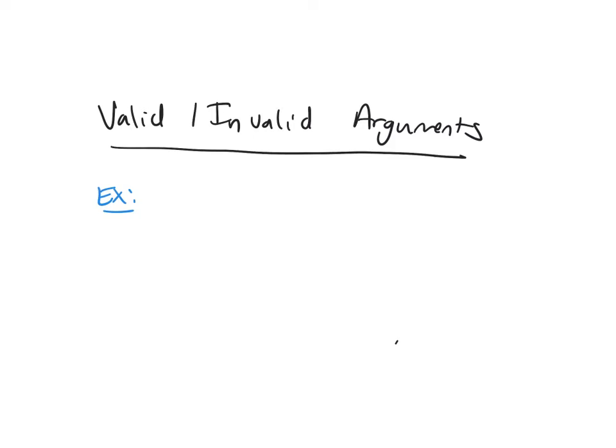So now let's talk about valid and invalid arguments. We're going to look at an example. Determine whether the argument form is valid.